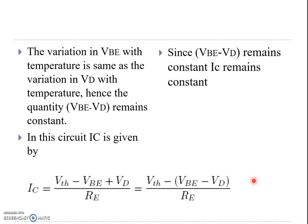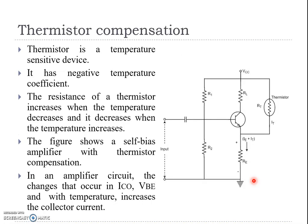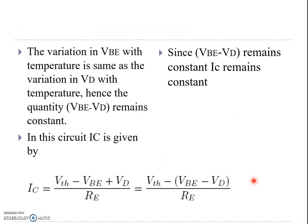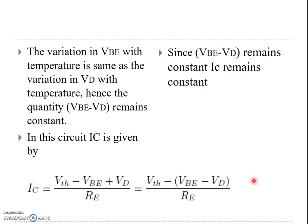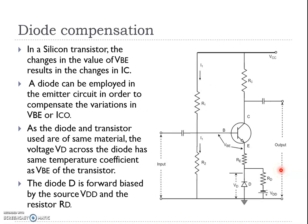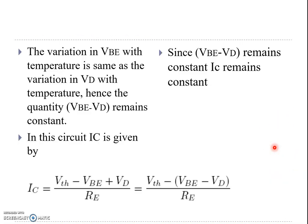Since VBE minus VD is almost constant, the collector current IC will be equal to VTH divided by RE. The threshold voltage VTH, R1, R2, and RE values are fixed by design, so the IC value remains almost constant.